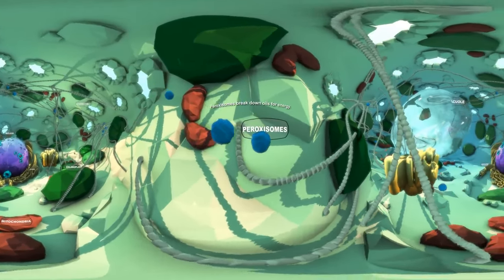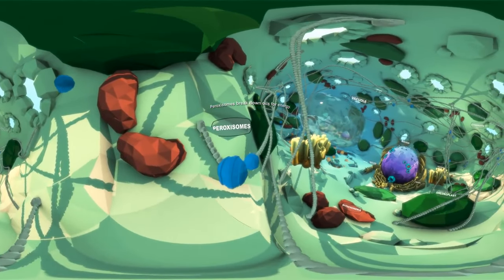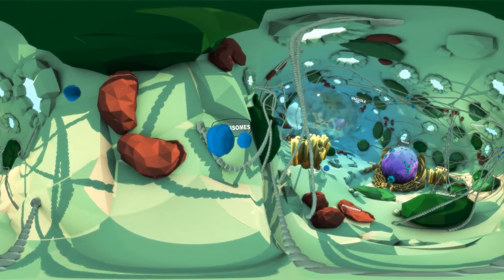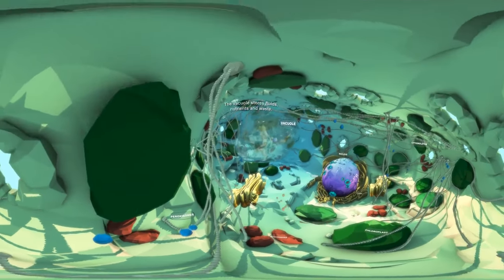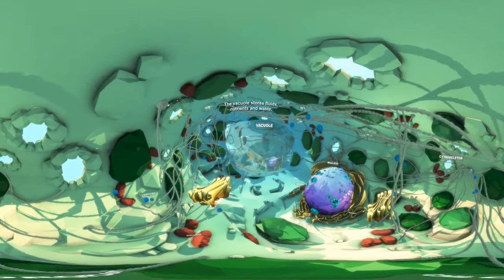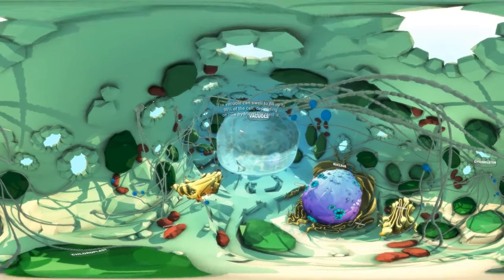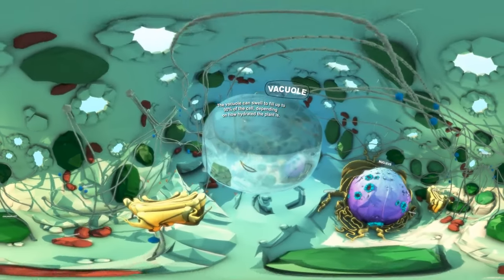Peroxisomes are responsible for breaking down oils for energy. A large vacuole acts as a storage bubble for a plant cell's fluids, nutrients, and wastes. A vacuole can occupy up to 90% of a plant cell.